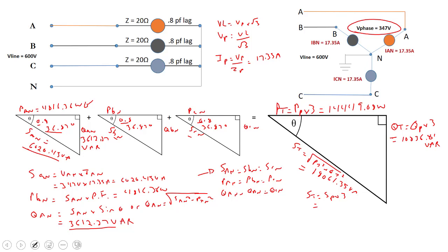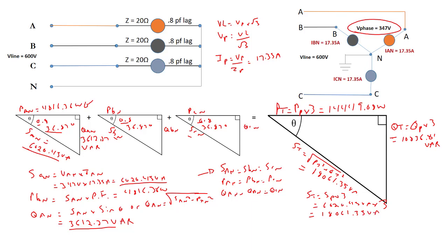Taking the phase apparent power of 6020.45 VA times three gives exactly 18,061.35 VA — the same value. And the power factor of the circuit equals total true power over S total, which is still 0.8.